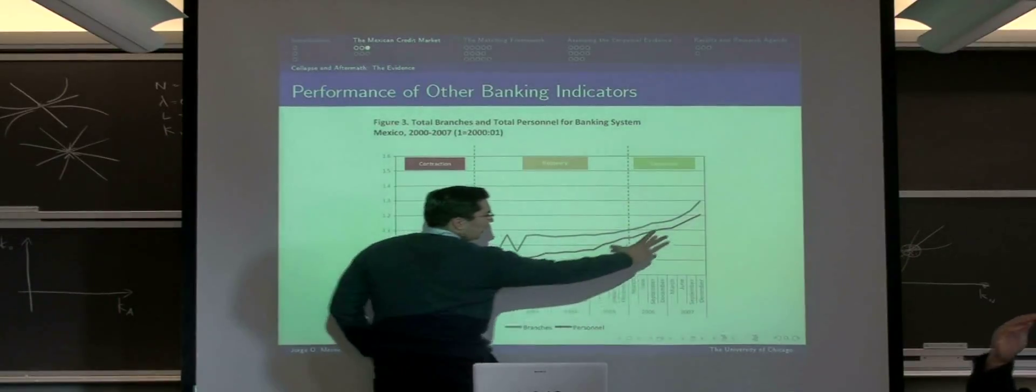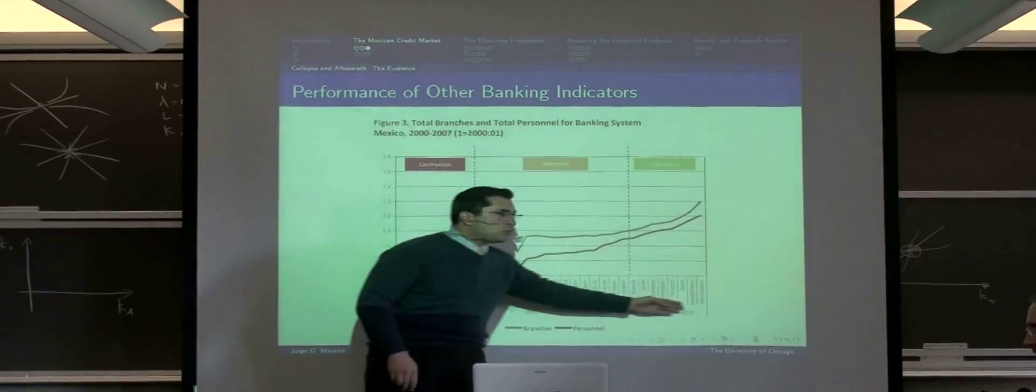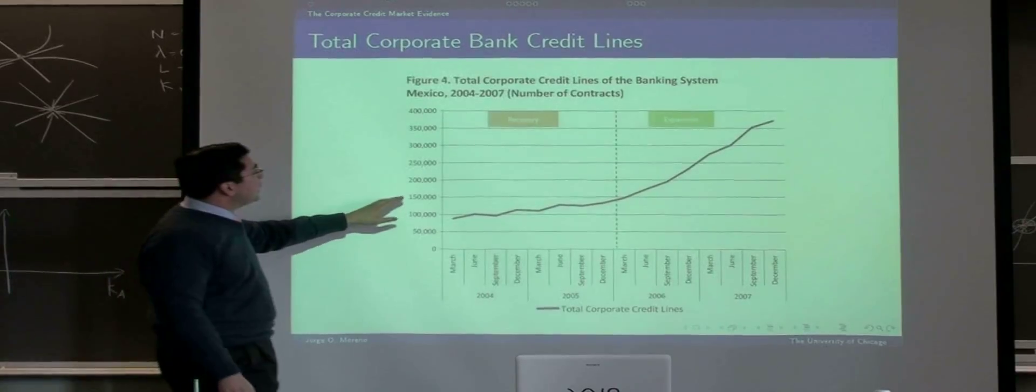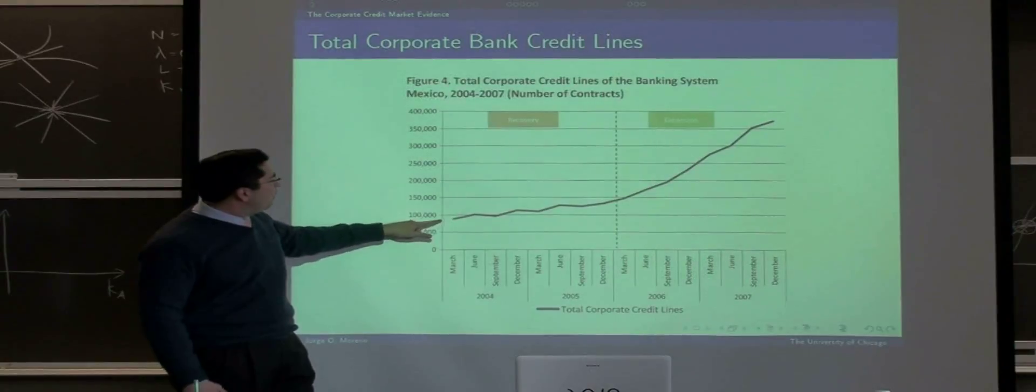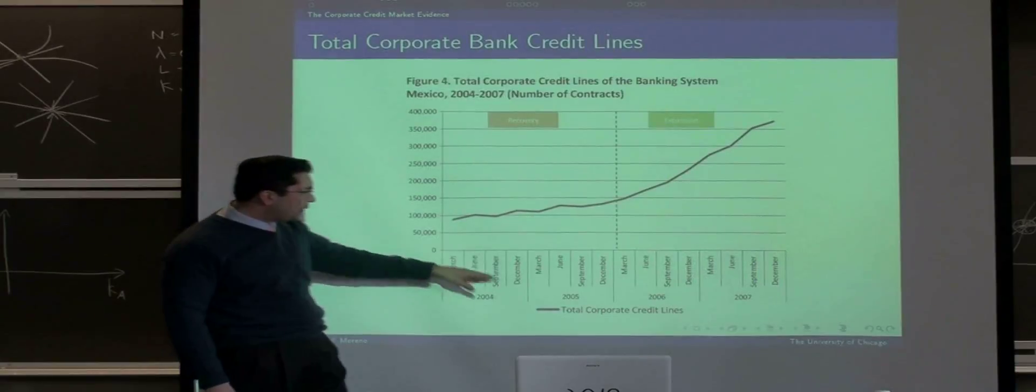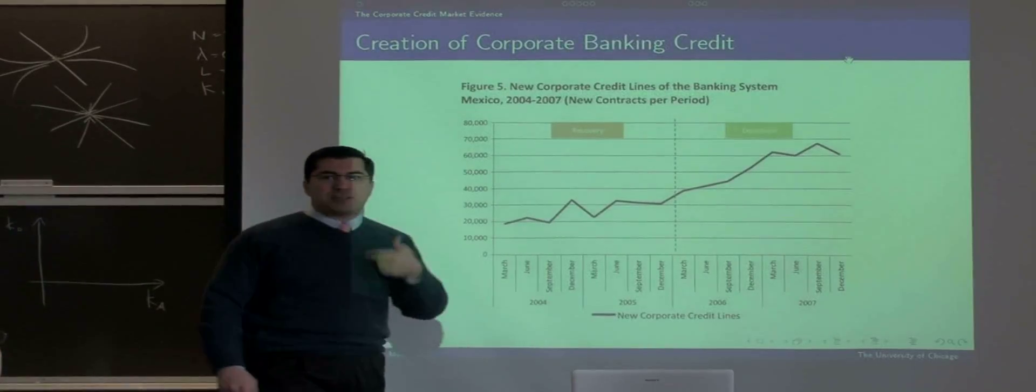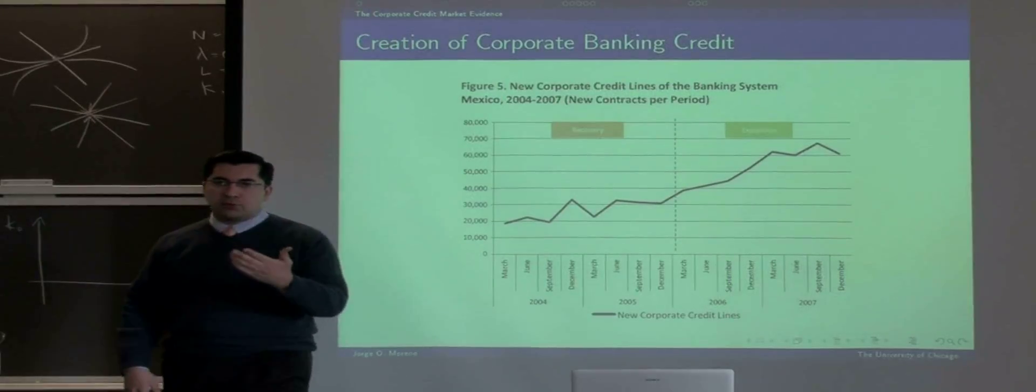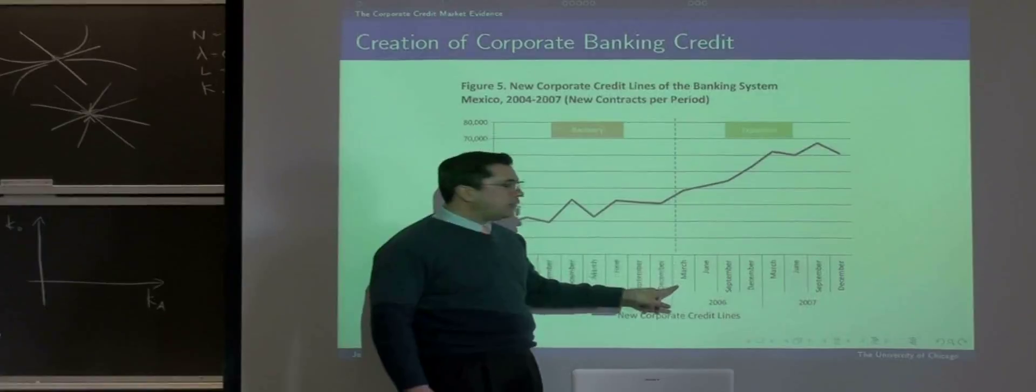If we analyze the total corporate credit lines at the market, we will see that the number of open lines at the market increased dramatically starting in 2006. The new contracts per month, which is a better measure of banking activity, also shows this increase starting in 2006.